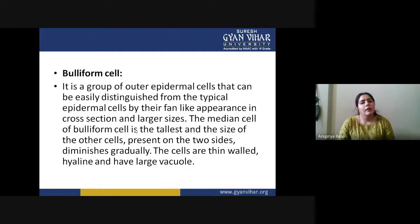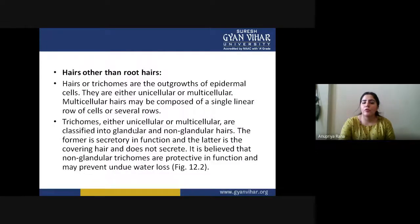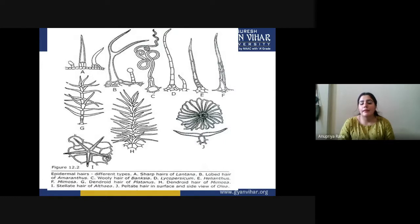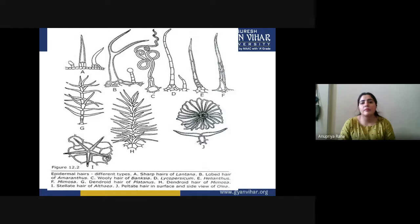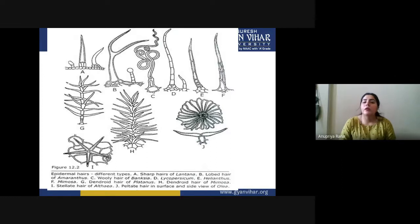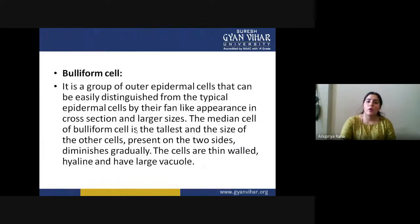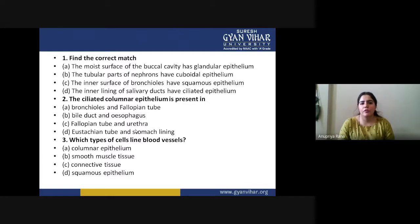To summarize the epidermis: it is mostly a single layer, sometimes multicellular in some leaves, and made up of parenchyma tissue. Lignification is very rare. The structures present inside the epidermis include stomata, hairs, lenticels, trichomes, and bulliform cells. The major functions are protection as an outer covering, gaseous exchange, transpiration, and providing a basic structural framework to the plant.